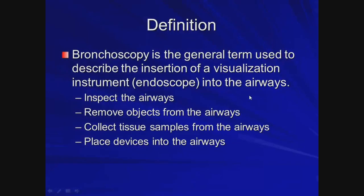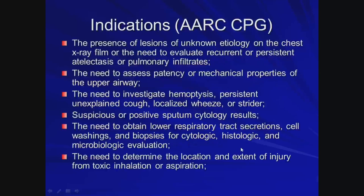Bronchoscopy is the ability to place a scope into the airways for multiple reasons: simple inspection to see where there might be damage such as after prolonged intubation — checking the state of the vocal cords and trachea; removal of foreign objects from the airways when a patient aspirates something they can't clear via cough; tissue sample collection particularly for biopsies to identify different types of cancers; and placement of intrabronchial stents to maintain patency. These indications come from the AARC clinical practice guidelines.